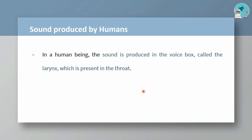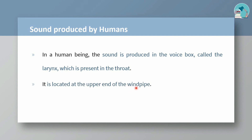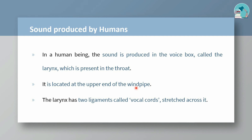The sound is produced by the voice box, which is the larynx. This is the throat. What is located in the wind pipe? The wind pipe is located at the end.